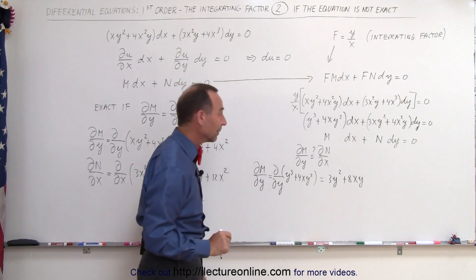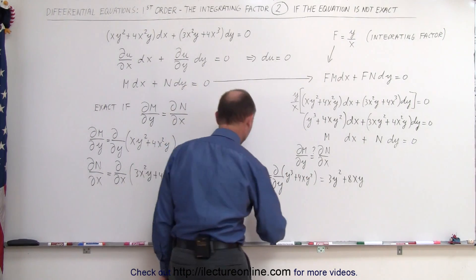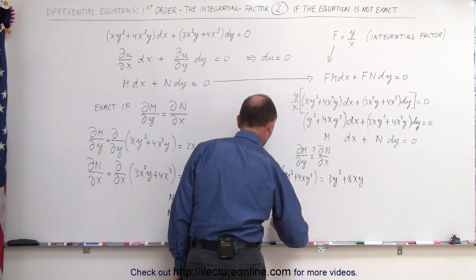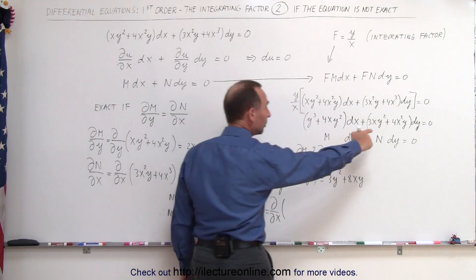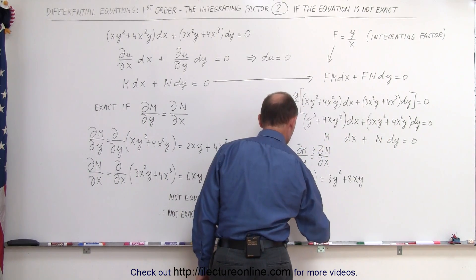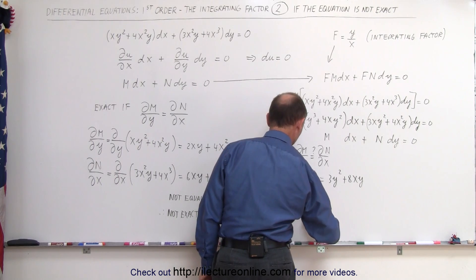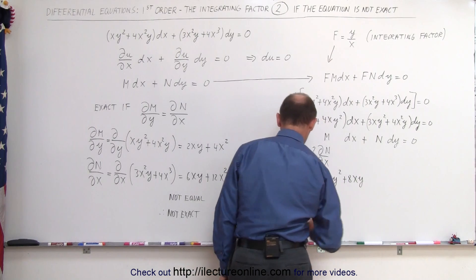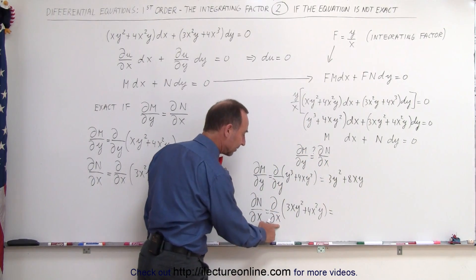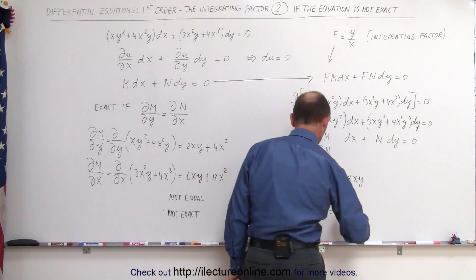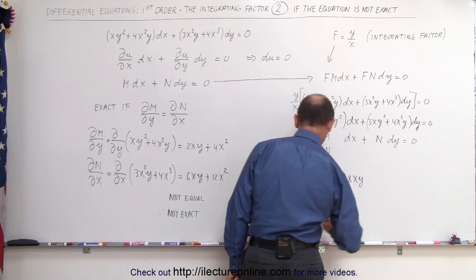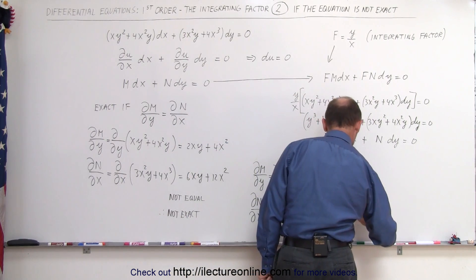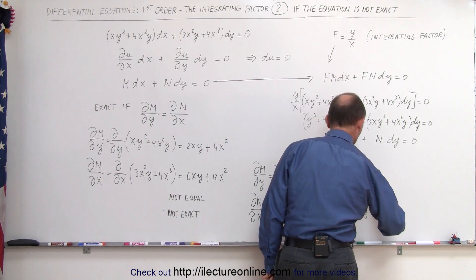Now the partial of N with respect to x equals the partial with respect to x of 3xy² plus 4x²y. Since y is a constant, this equals 3y² plus 8xy. Notice the two are equal.